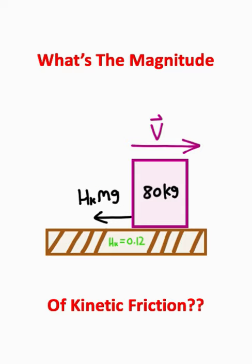Our coefficient of kinetic friction is 0.12, the total mass is 80 kilograms, and our gravitational acceleration on earth is 9.8 meters per second squared. So 0.12 times 80 times 9.8 is approximately equal to 94.1 Newtons.